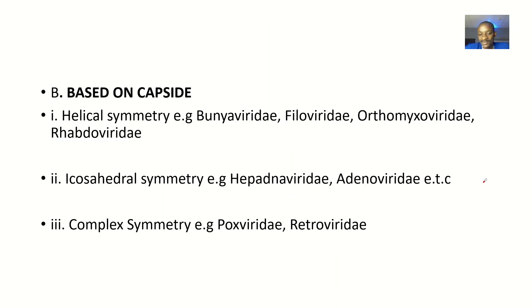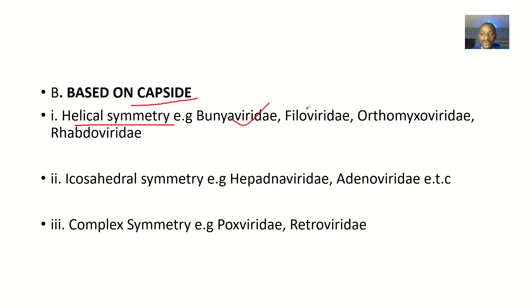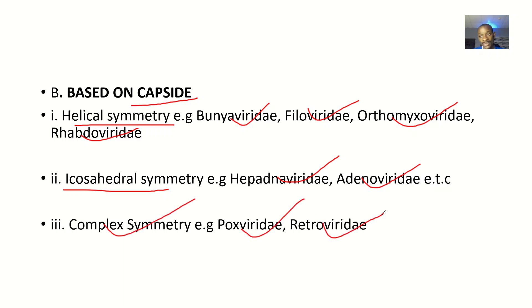Moving to the next classification — based on capsid, we have helical symmetry, where viruses are helical in shape, like two DNA strands intertwisting. Examples include Bunyaviridae, Filoviridae, Orthomyxoviridae, and Rhabdoviridae. For icosahedral symmetry, we have Hepadnaviridae and Adenoviridae. Based on complex symmetry, we have Poxviridae and Retroviridae.